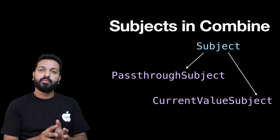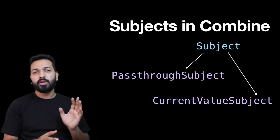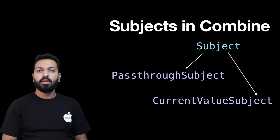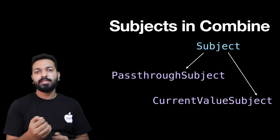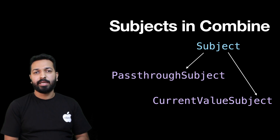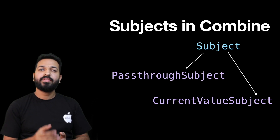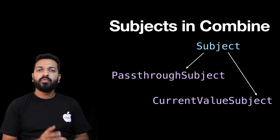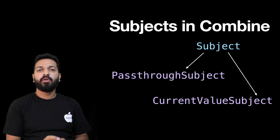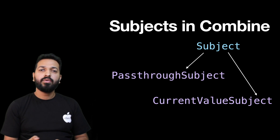PassthroughSubject should be used when you want to emit a value whenever any action is performed — for example, a tap on a button. So if you want to give a callback from a table view cell to your view controller when a button is tapped, PassthroughSubject is a good candidate. CurrentValueSubject is more useful when you are interested in the state of an object — for example, a switch. Even when the user hasn't performed any action, a switch has a state: either on or off. Sliders also have a value at any given point in time. So CurrentValueSubject is useful when you want to know the current state, and because of this, CurrentValueSubject will always have an initial value, which is not the case with PassthroughSubject.